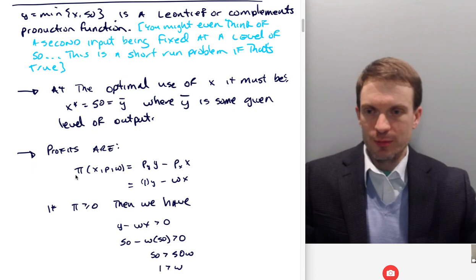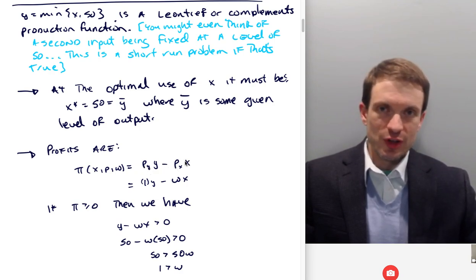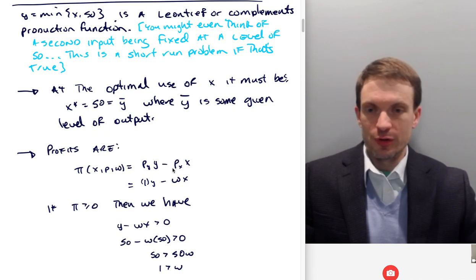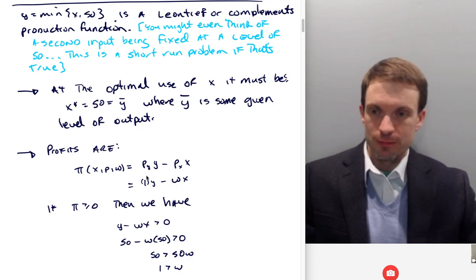And so I'm going to write down the profit function, think about profit maximization. Well, profits for this firm are going to be the amount of output times the output price, minus the expenditure on the input. So the input price times the use of the input. And so, we had a factor, the output price was one, the factor price was omega. So we'll have Y minus omega X is going to be our profit function.